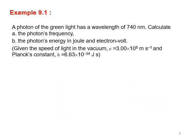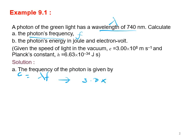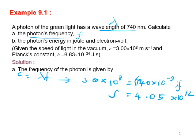Example 9.1: a photon of green light has a wavelength lambda of 740 nanometers. You need to calculate the photon frequency — find F. The frequency is given by c = λF, where the speed of light is 3 × 10⁸. So 3 × 10⁸ = 740 × 10⁻⁹ × F, giving F = 4.05 × 10¹⁴ hertz.